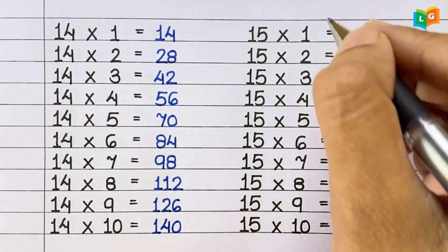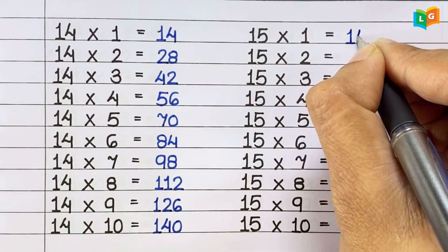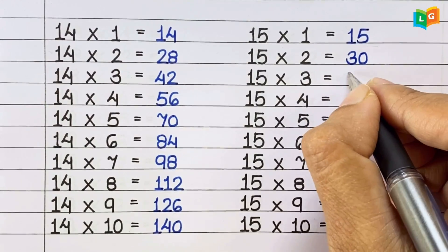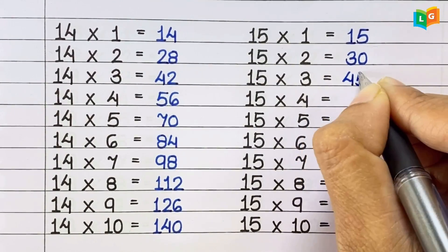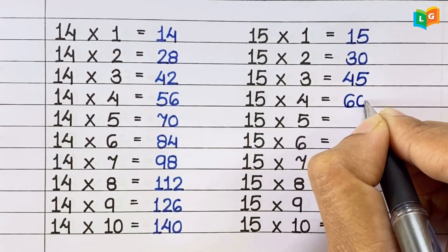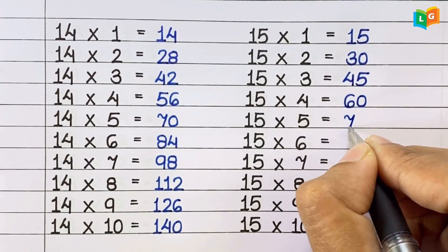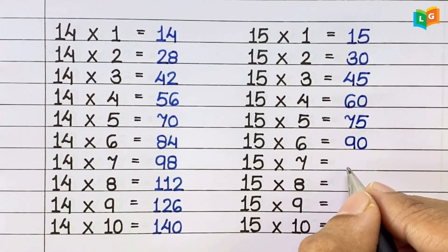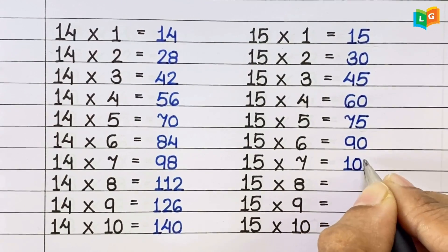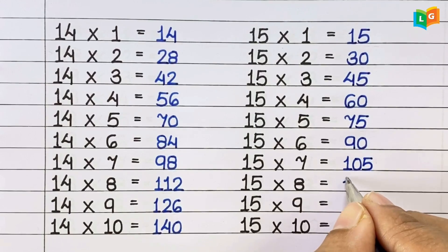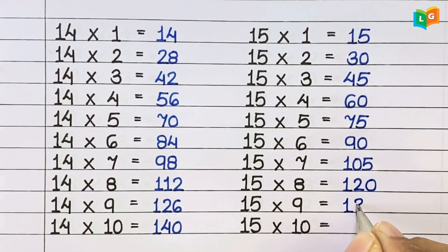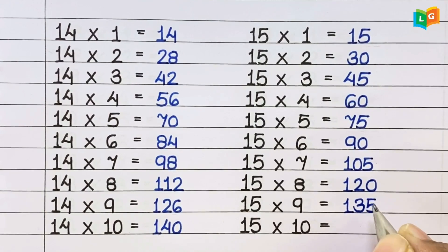Now let's see table of 15. 15 1s are 15, 15 2s are 30, 15 3s are 45, 15 4s are 60, 15 5s are 75, 15 6s are 90, 15 7s are 105, 15 8s are 120, 15 9s are 135, 15 10s are 150.